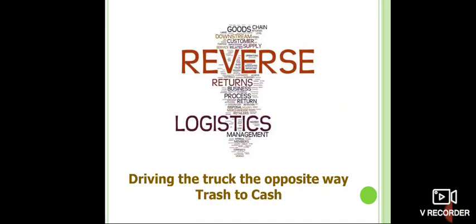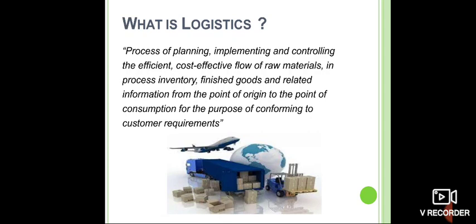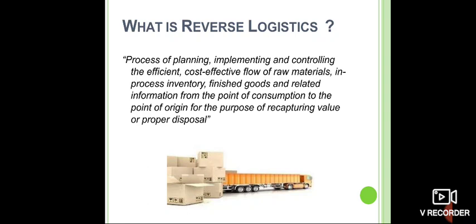Now we turn to reverse logistics, which is closely related to green supply chain management — described as driving the truck the opposite way, from trash to cash. Logistics is the planning, implementing, and controlling of raw materials, inventory, finished goods, and related information services from the point of origin to the point of consumption to meet customer requirements.